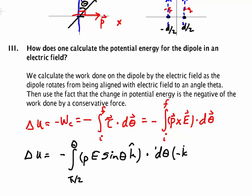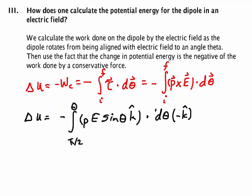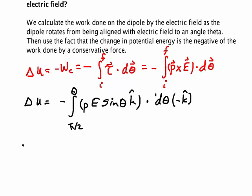Now P and E are constants in the problem, so we can pull out the magnitude of the electric field and we can pull out the dipole moment magnitude. So we got minus P and E. k dotted into minus k is minus 1—that makes this a plus—and then we have the integral from pi over 2 to theta of sine theta d theta.